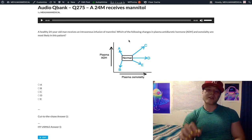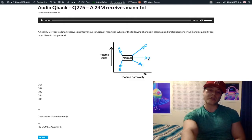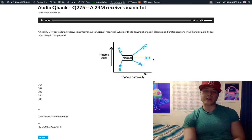So if we give mannitol, a sugar alcohol, we're going to increase plasma osmolality. We know we're dealing with answers C, D, or E, where plasma osmolality has increased along the x-axis.